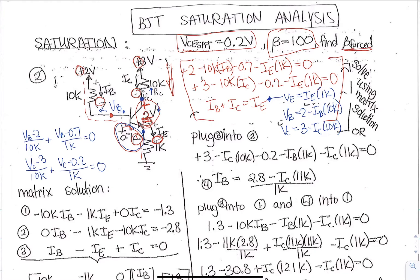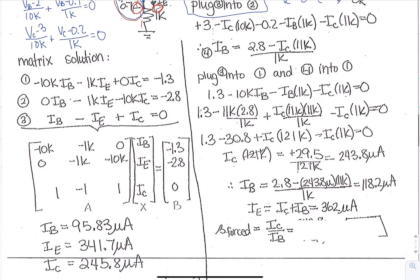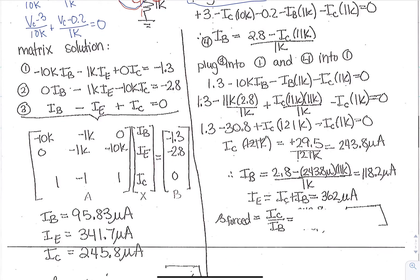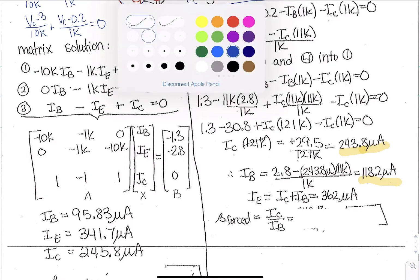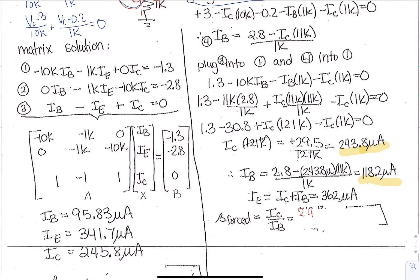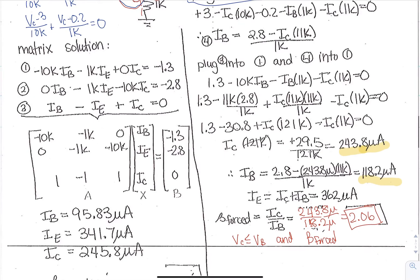So I can do the algebra, which is this here. And you have that written out that you can go through all of the algebra as an exercise. This is going to yield a value of 243.8 micro for IC. And IB is 118.2 micro. So beta forced is going to be that value of 243.8 micro divided by 118.2 micro. And that gives a value of 2.06. So our check here again is that we check that VC is less than or equal to VB. And the beta forced is a lot less than the original value of beta, which was 100.